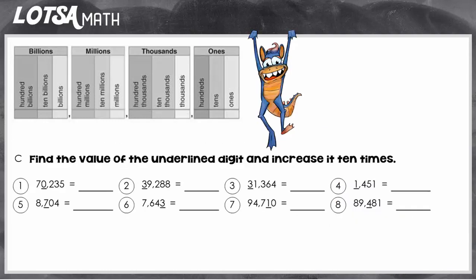Let's look at number two. The underlined digit is a three, and its value is 30,000. The value of the three is 30,000. And now we're going to make it ten times bigger, so what we have to do is 30,000 times ten.